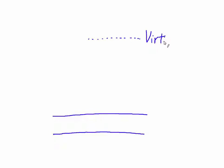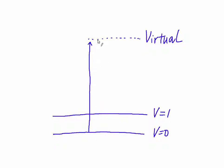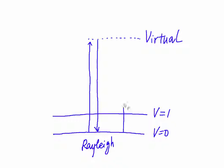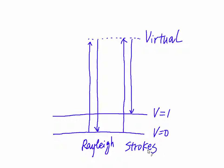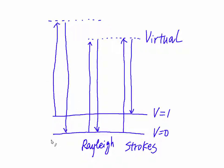These lines show the vibrational levels. Level 0 is the ground level. The electromagnetic radiation can excite the molecule, but if it returns to the ground level, then it is an elastic vibration, which is Rayleigh scattering. But if it returns to a higher vibrational level, then it is Stokes scattering.